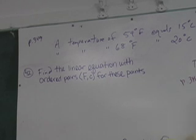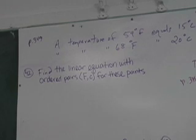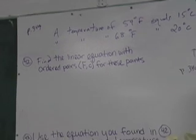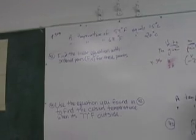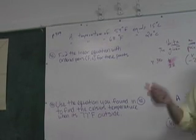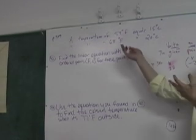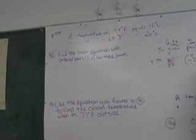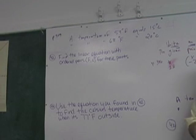Once we do that, we're going to use the equation found in number 42 to find the Celsius temperature when it's 77 degrees Fahrenheit outside. First things first — what do we do? We've got a word problem and they're giving us information. How do we process it? What do we do with that information? Find the slope.